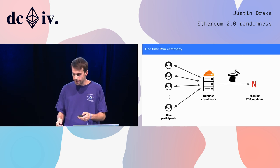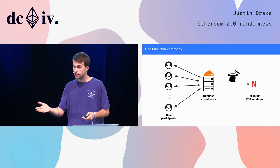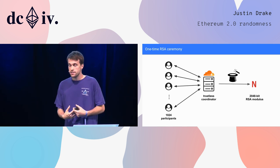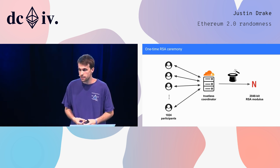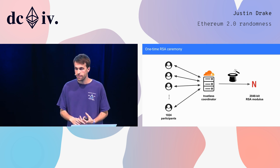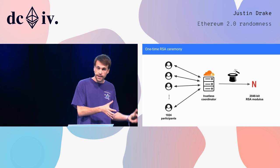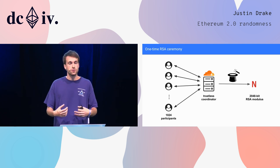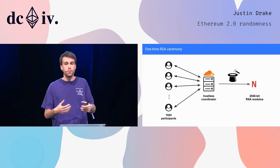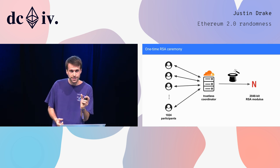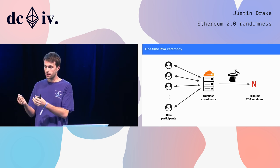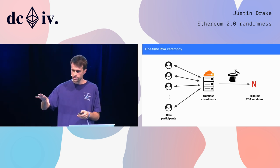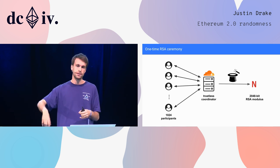There is one important detail: how do you generate the modulus? We need an RSA modulus which no one can factor. The preferred approach we're looking into is having an RSA ceremony, similar to what Zcash did with the powers of tau. You have a bunch of participants — for example, 1,000 — participating in a multi-party computation. You need just one of them to be honest in order for the output — a 2,000-bit RSA modulus — to be unfactorizable by everyone. We could have a trustless coordinator in the middle to speed things up.